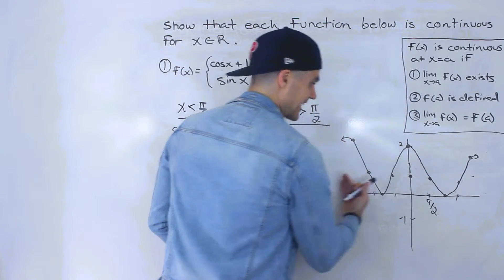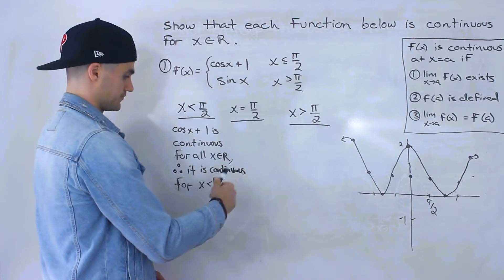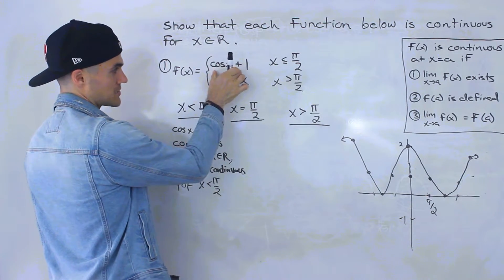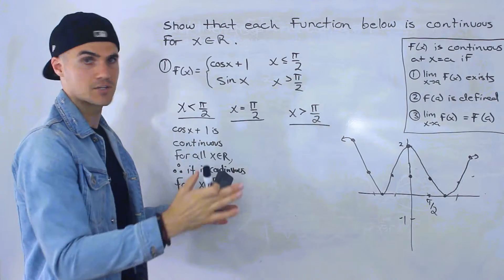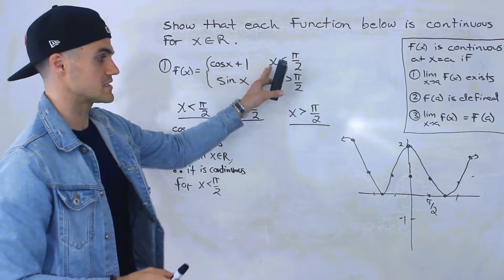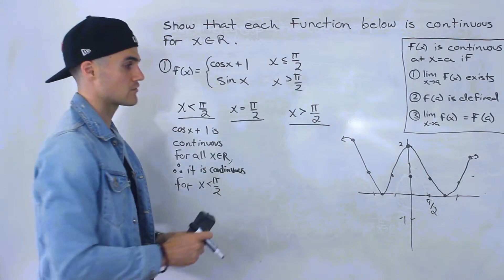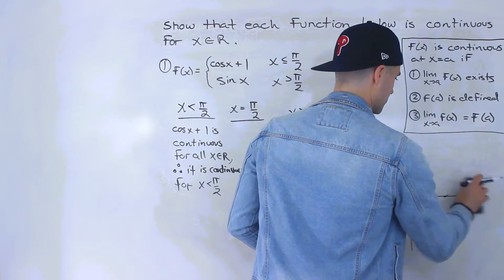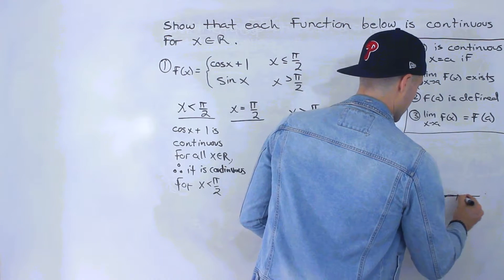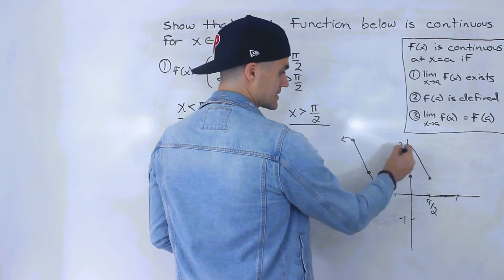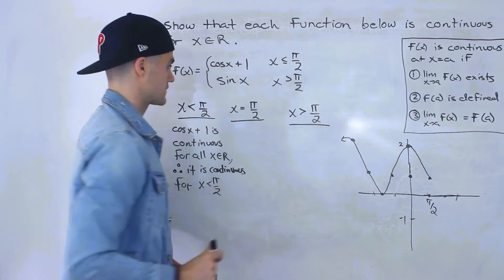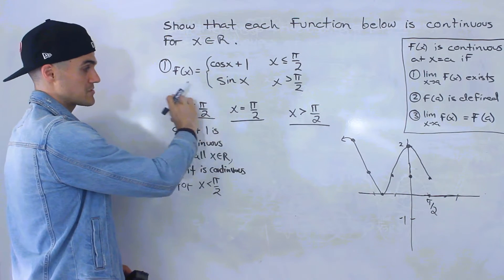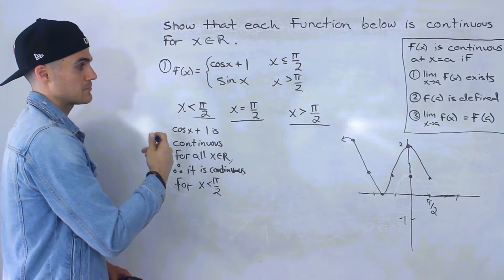Notice that π/2 is over here on the graph. So for all x values less than π/2, this piecewise function is going to be continuous because it's defined by cos(x) plus one. Since cos(x) plus one is continuous everywhere, this piecewise function is continuous for x values less than π/2. So we're done with this portion of the domain.